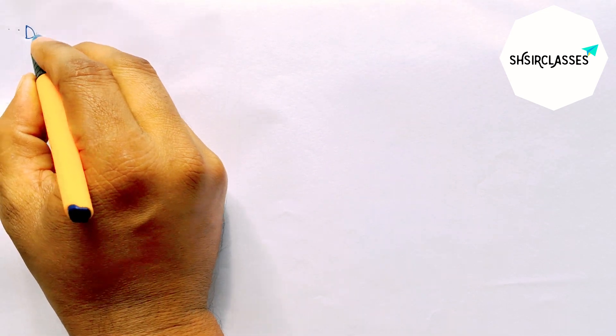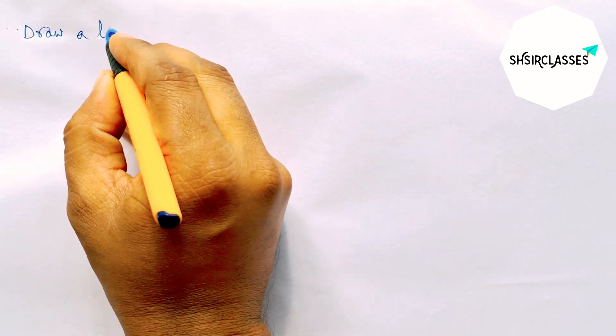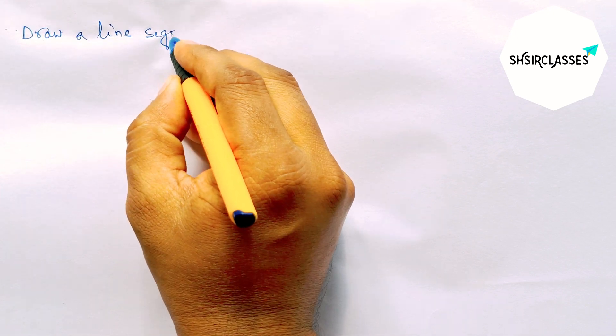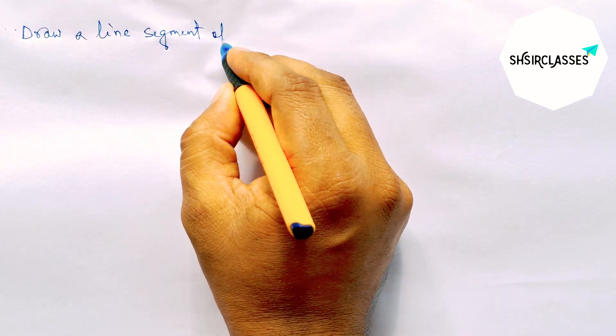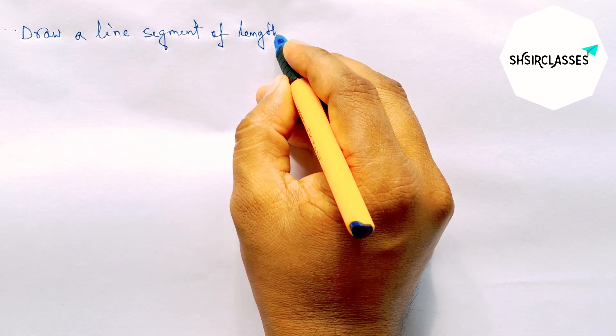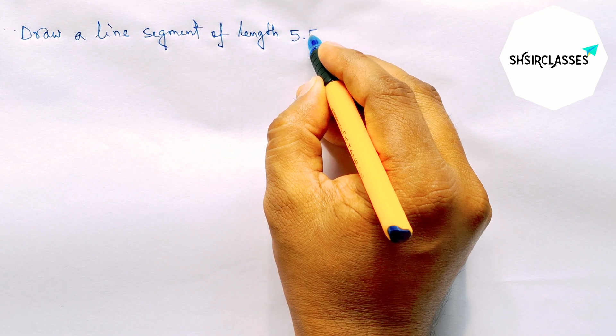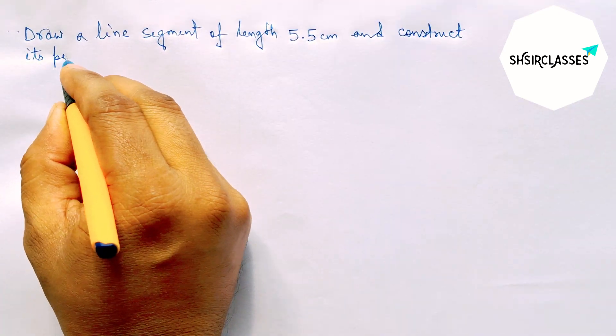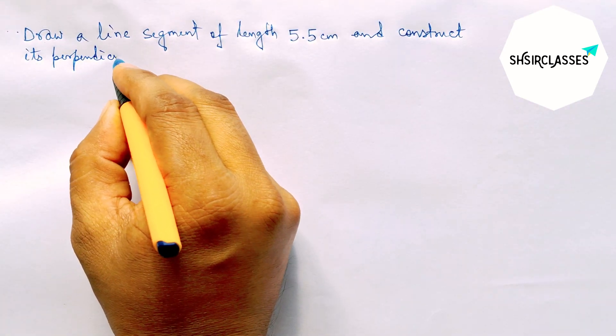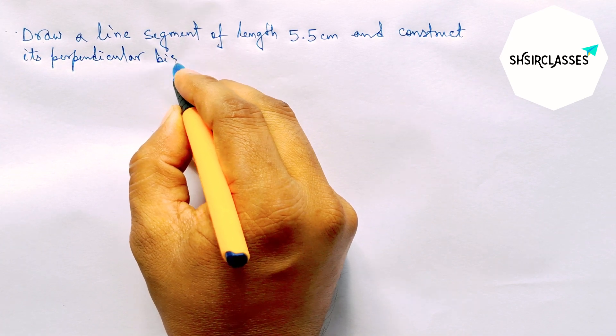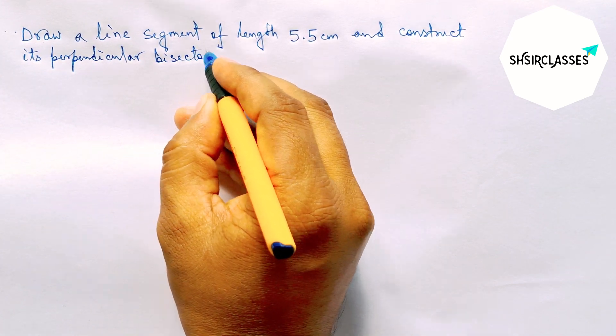Hi everyone, welcome to Say Share Glasses. Today in this video, draw a line segment of length 5.5 centimeter and construct its perpendicular bisector to the line AB in easy way. So please watch the video till the end.